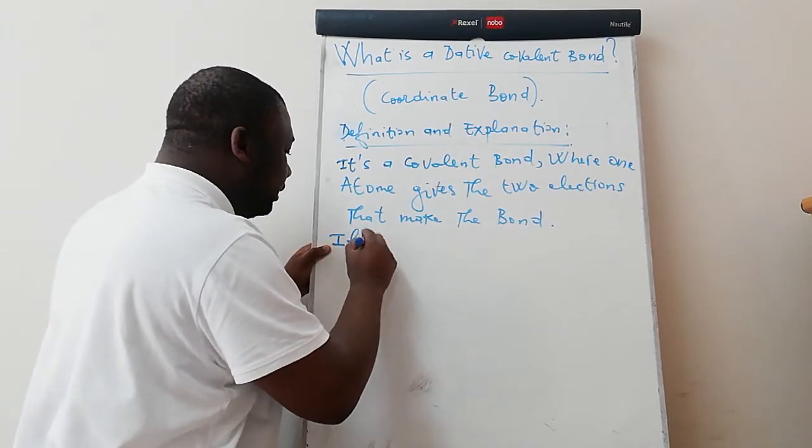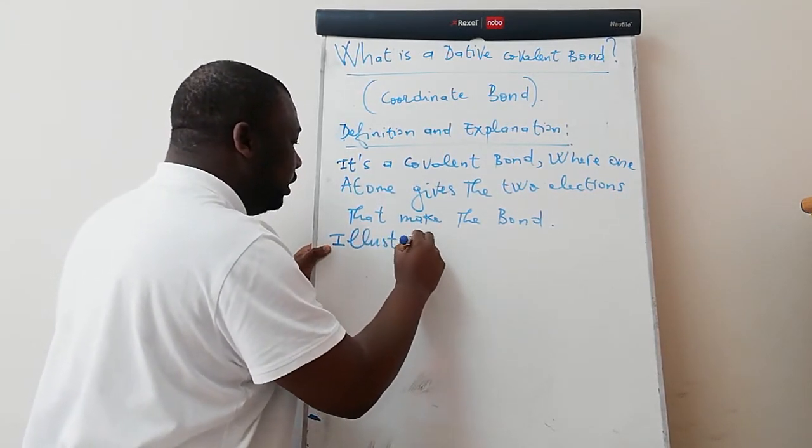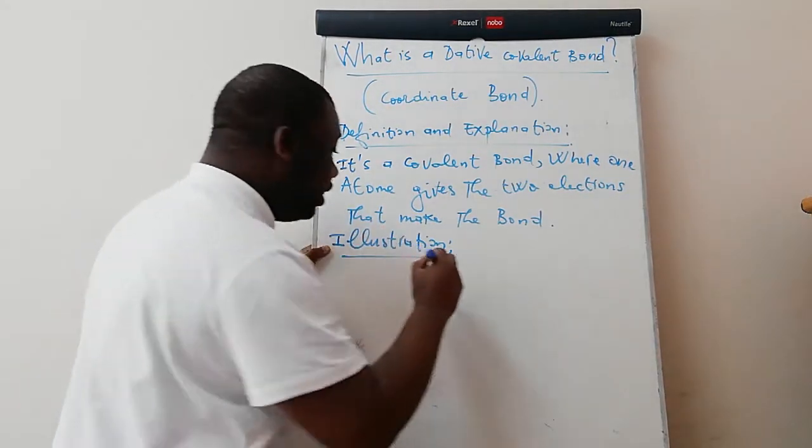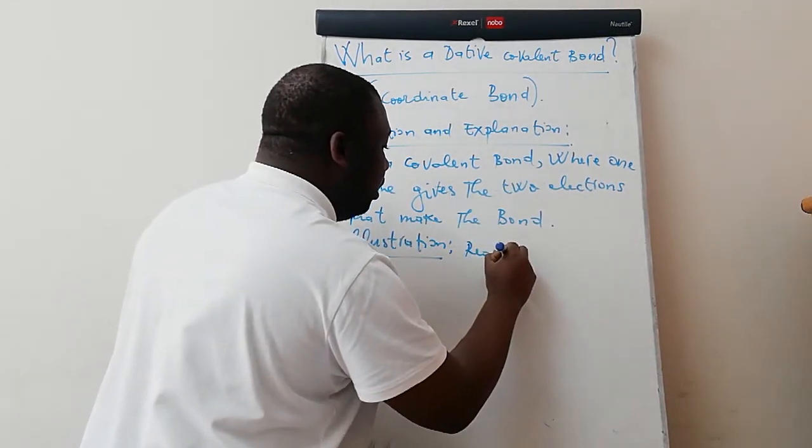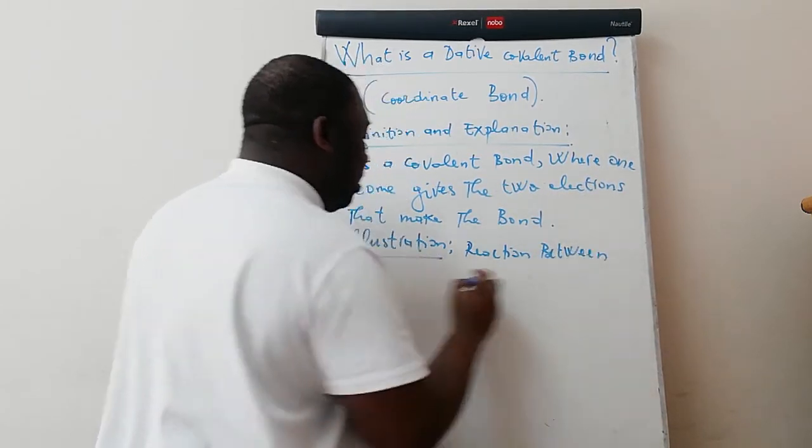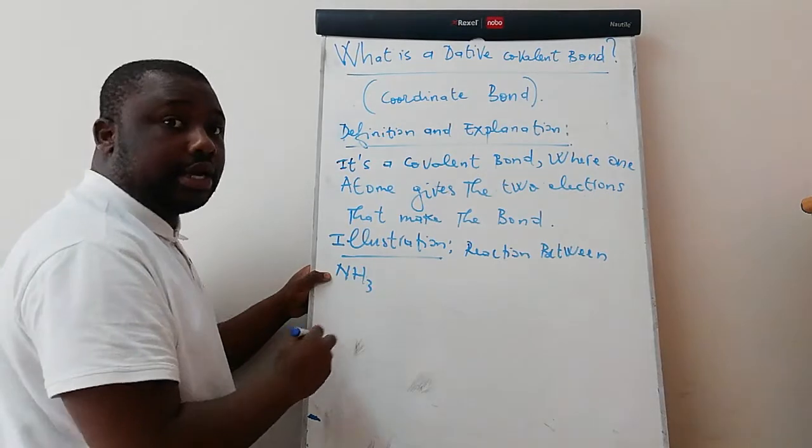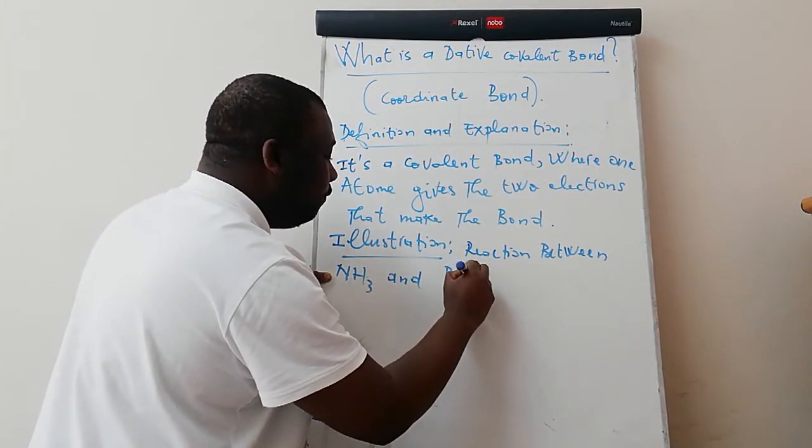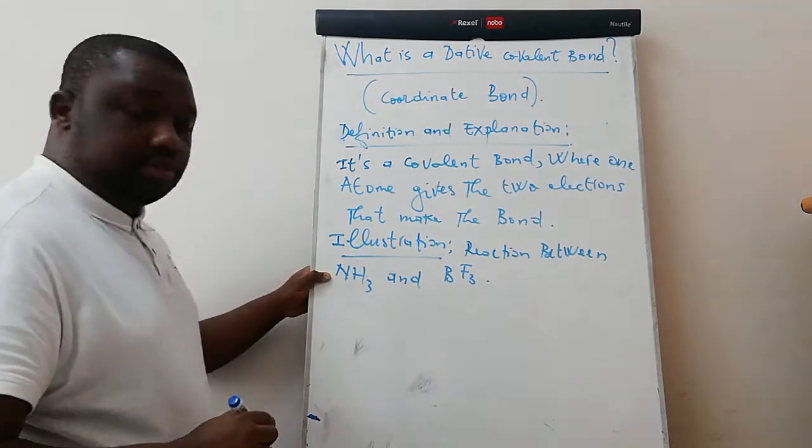Now, how is it formed? Illustration. Let's consider the reaction between ammonia, which is NH3, and boron trifluoride.